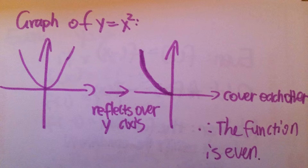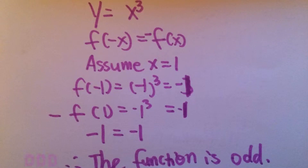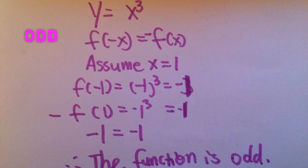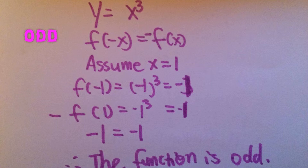This is the fun part about these kinds of questions. Now we are going to look at the odd functions. Substituting a number also helps. The function y equals to x cubed is what we are going to talk about. According to f of negative x equals to negative f of x, if we take a look at f of negative x and assume x is 1, then negative x equals to negative 1. We compute, and the answer is negative 1. Regarding negative f of x, we substitute 1 into the function — 1 cubed is 1 — then we apply the negative sign, so it changes to negative 1. Negative 1 equals to negative 1, so the function is odd.